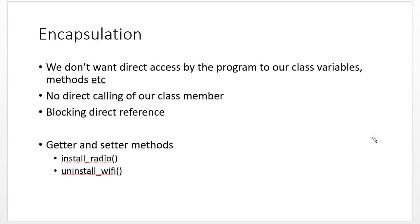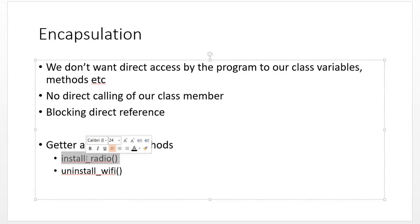Encapsulation is where we do not want our program to have direct access to our class members — variables, methods, and constructor. We block direct access to class members. For example, instead of other classes directly calling a method that installs a radio, we create a method called 'installRadio' that blocks any reference to the back-end workings.